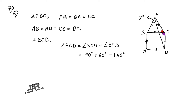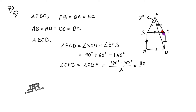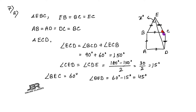Triangle ECD is an isosceles triangle because EC = DC. So angle CED = angle CDE = (180 − 150) / 2 = 30 / 2 = 15°. The whole angle BEC = 60° (equilateral triangle). Therefore angle BED = 60 − 15 = 45°, which is the final answer.